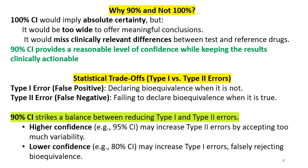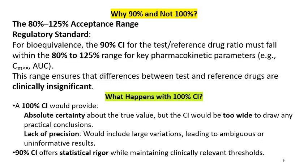A higher confidence level like 95% may increase type 2 errors by accepting too much variability. A lower confidence level like 80% CI may increase type 1 errors, meaning falsely rejecting bioequivalence. We should not declare bioequivalence when it is not true, and we should not declare bioequivalence is failing when it is actually passing. So 90% CI strikes the balance between these two errors.